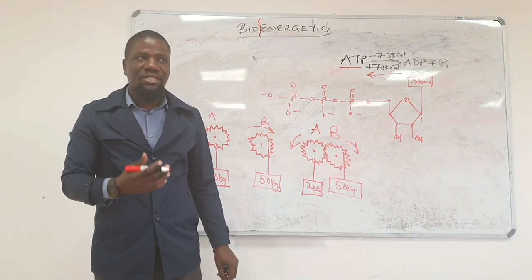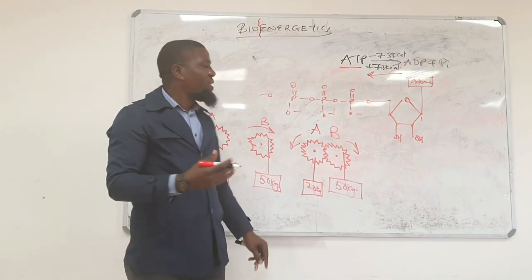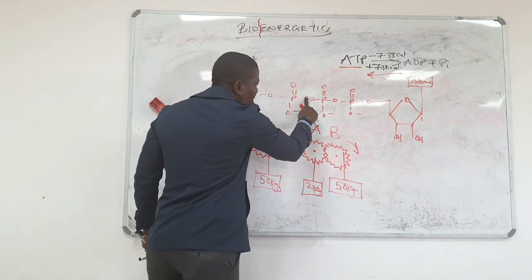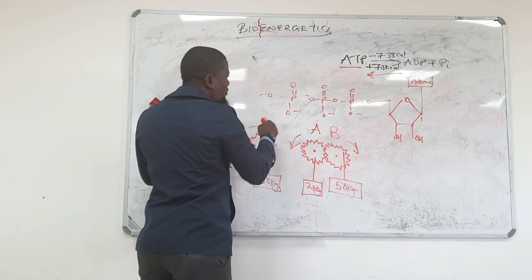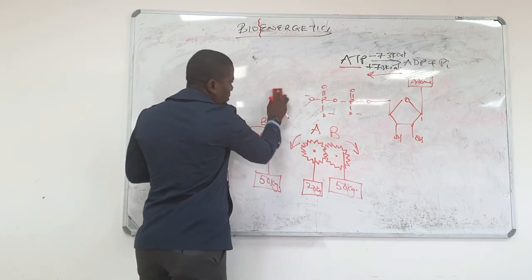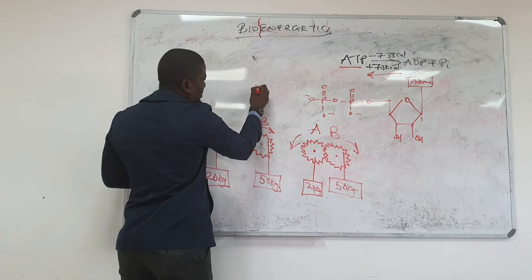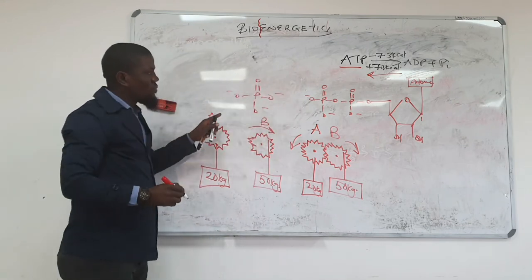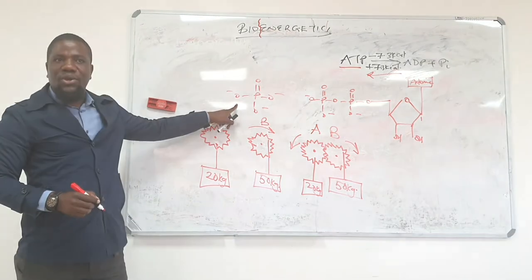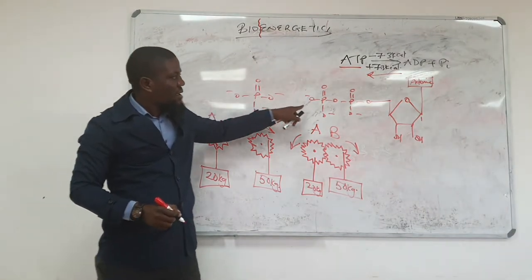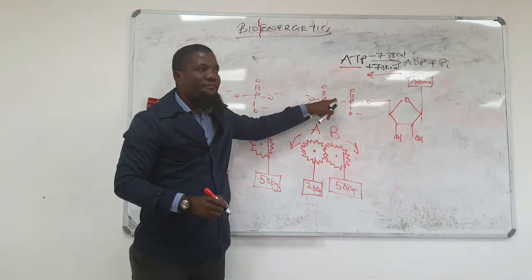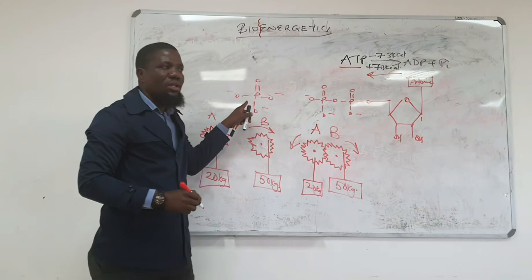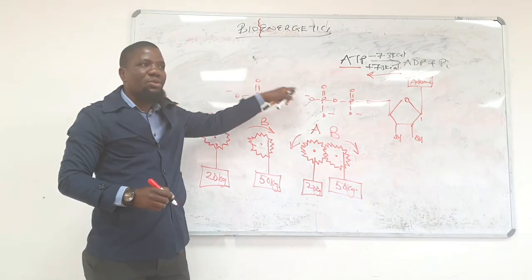When ATP hydrolyzes to ADP, what is happening is that one phosphate is coming off. When a phosphate comes off, you're going to have ADP, adenosine diphosphate. This has less repulsion than the first one because it has three phosphates.